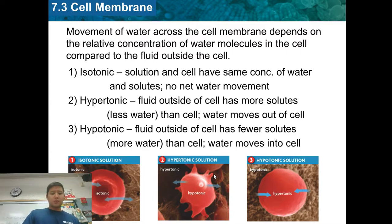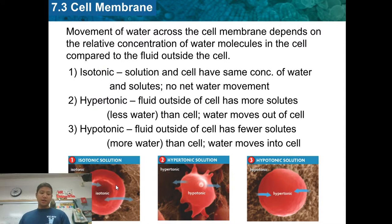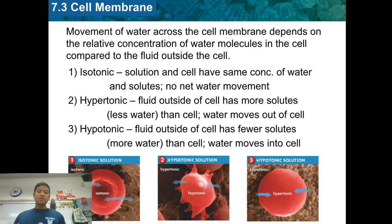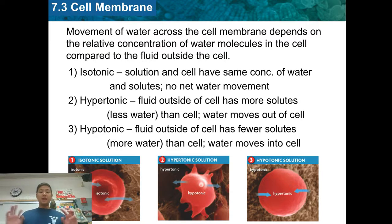We have three solutions to talk about. The first is isotonic — when there's the same amount of salt inside as outside the cell. People think that with isotonic, water is not moving at all, but that's incorrect. Water is moving into the cell and out of the cell, but at the same rate. So overall, there is no net movement, but water is still moving.